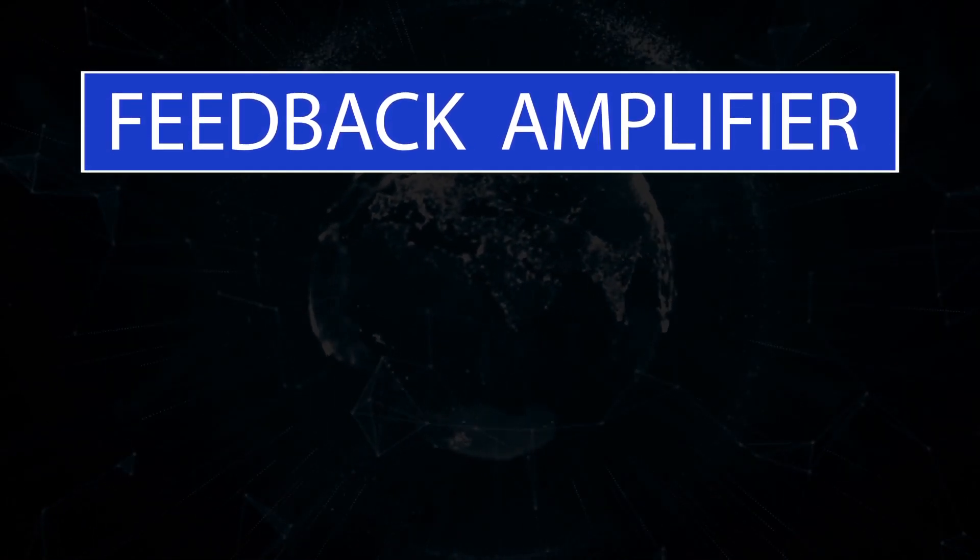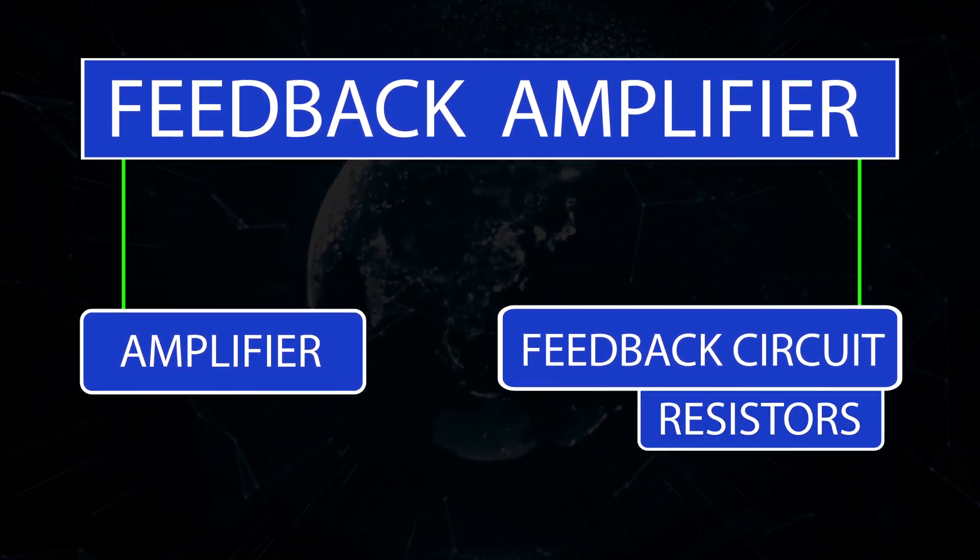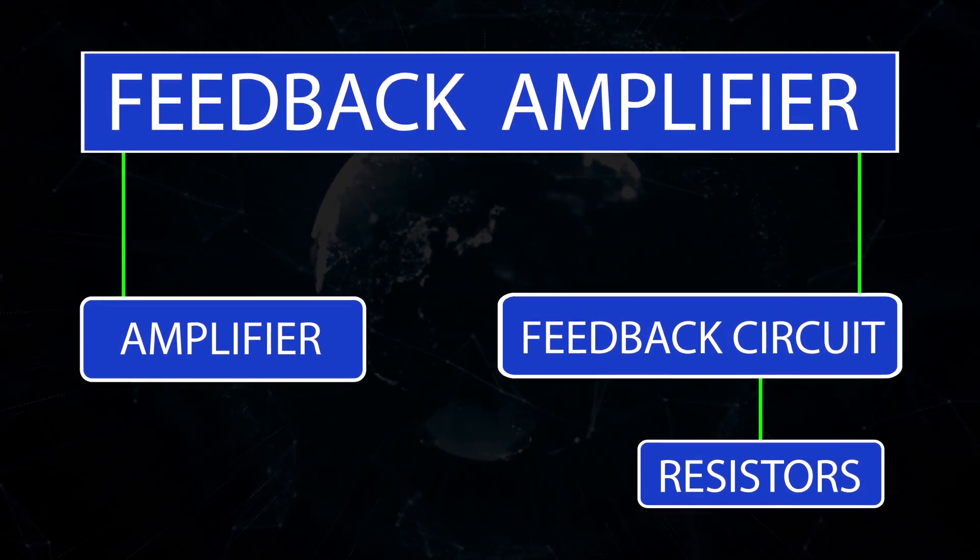A feedback amplifier generally consists of two parts. They are the amplifier and the feedback circuit. The feedback circuit usually consists of resistors.